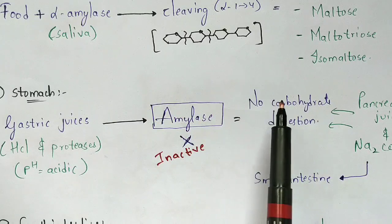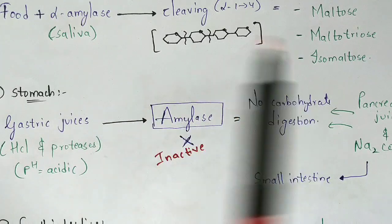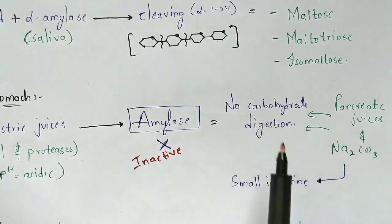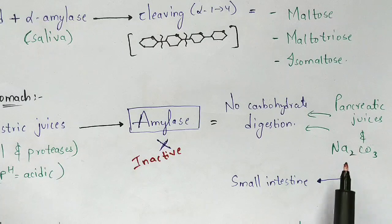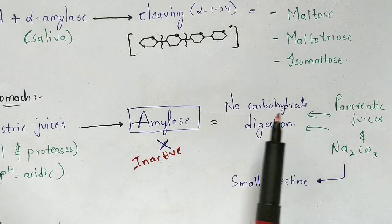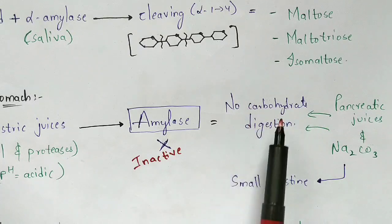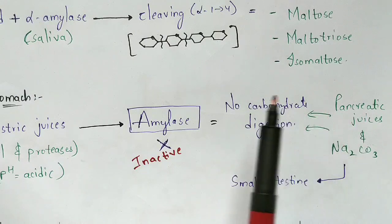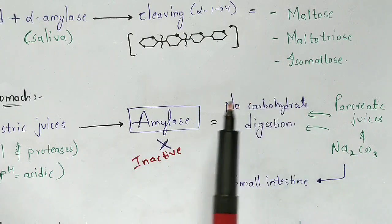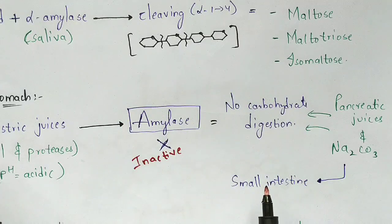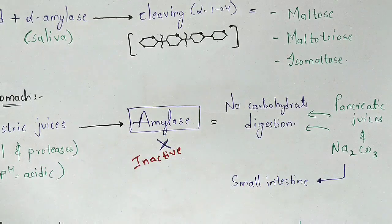When carbohydrate digestion stops in the stomach, the pancreas comes into function. The pancreas starts secreting pancreatic juices and sodium carbonate. These combine with the food containing inactive amylase, and the food then starts migrating towards the small intestine. This is the process occurring in the stomach, and the actual digestion process begins in the small intestine.